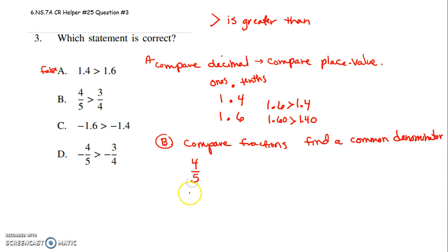So if I have four fifths and I have three fourths, I'm going to rewrite each of those with a common denominator of twenty. How do I get from five to twenty? I multiply by four. So if I'm multiplying the denominator by four I need to multiply the numerator by four. So that is sixteen twentieths. Here I'll multiply four by five to get to twenty. If I'm multiplying the denominator by five I need to multiply the numerator by five. Three times five is fifteen.